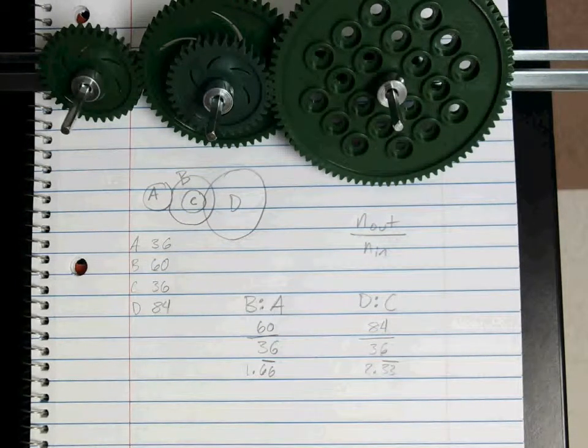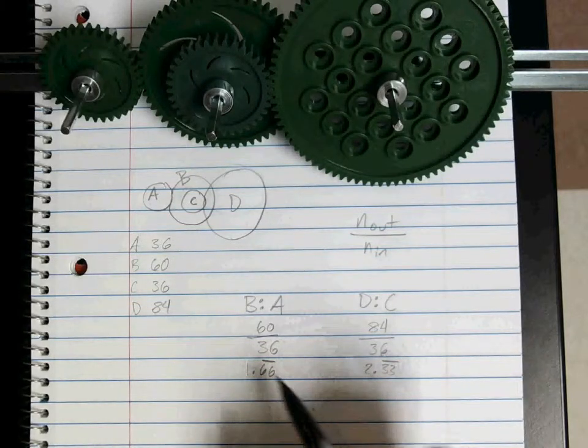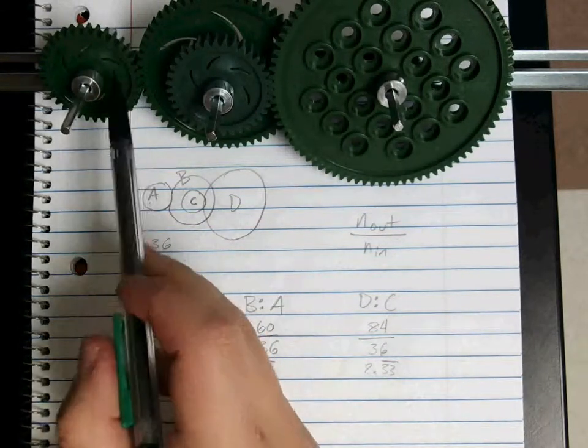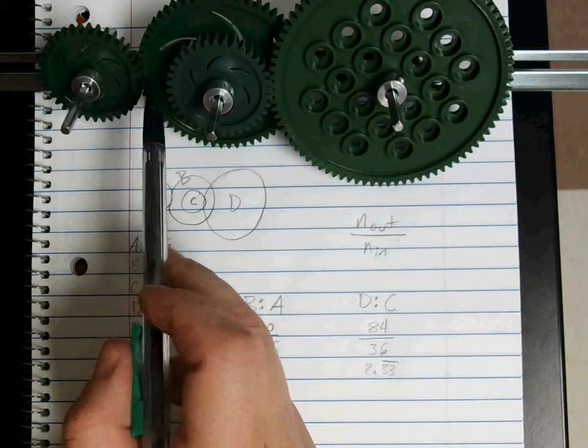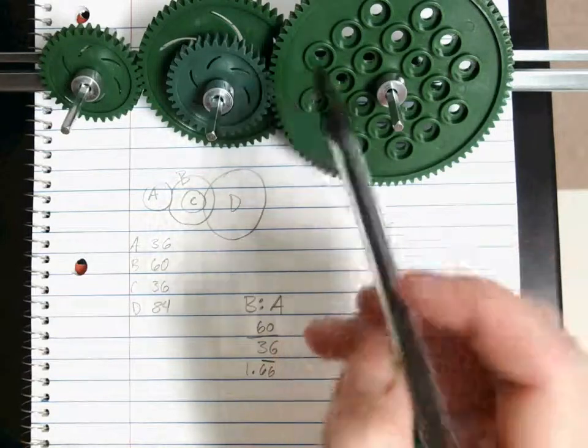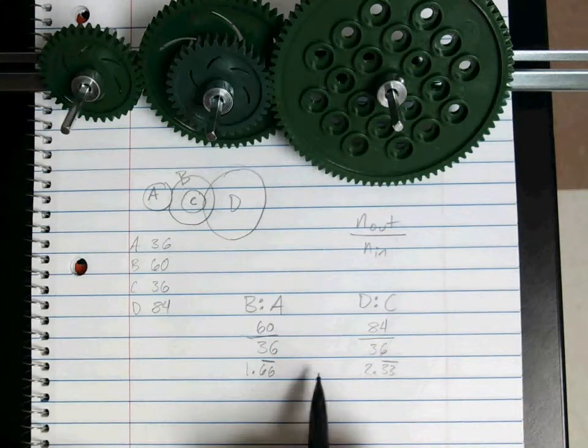When we multiply these together, remember we're trying to find our final gear ratio, and we do so by multiplying the two ratios we have. Since these are directly threaded together, that's our ratio. These are on an axle together, so we don't have a ratio. And then C and D are threaded, so we do have a ratio. So we only have two to multiply together.